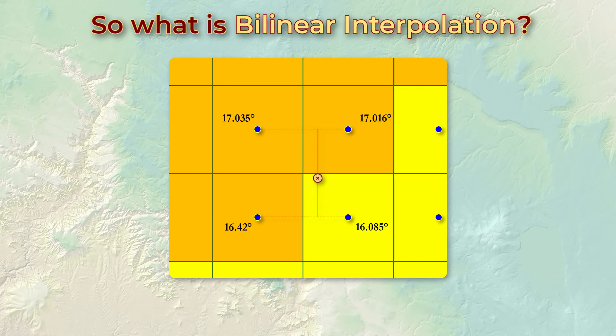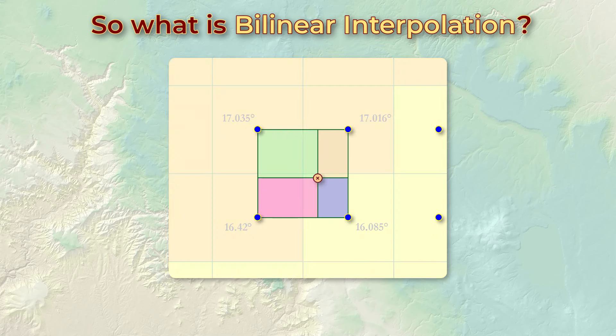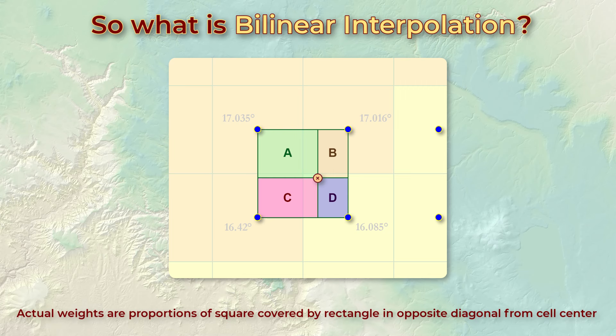The net effect of the mathematical algorithms is to divide the region between the four cell centers into four rectangles like this, and weight each slope value by the proportion of the square covered by the rectangle on the opposite corner of the square.